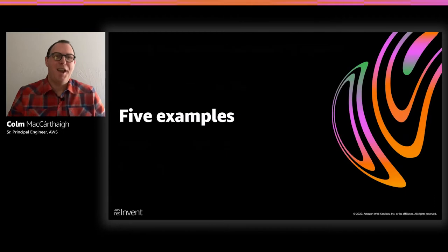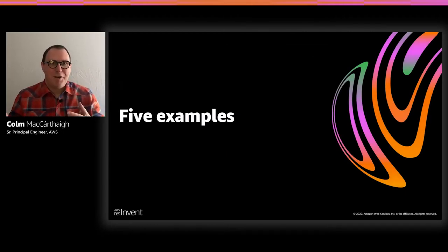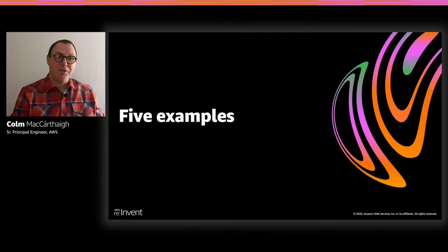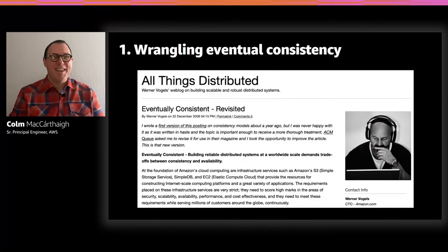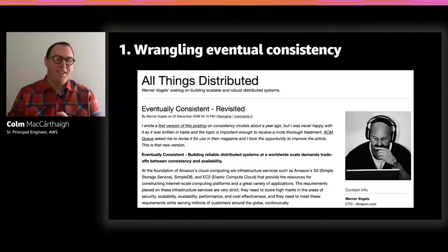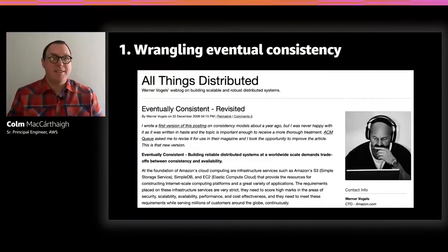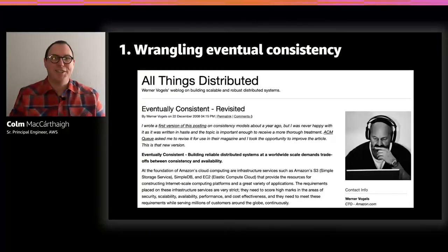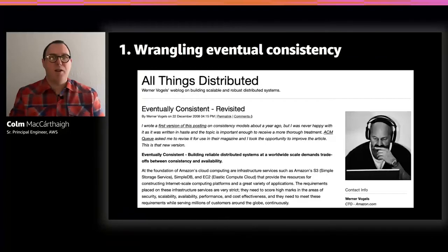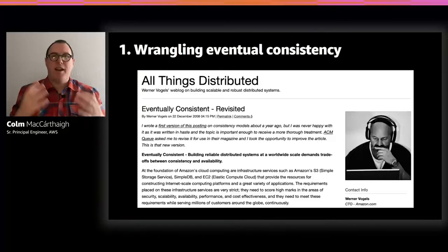I want to get into five examples of things customers have told me make sense for us but may not make sense for them. The first — and one of the oldest things we've been raving about at AWS — is eventual consistency. When I joined in 2008, this was a big topic. Essentially, when you get a lot of things updating a database, it becomes very contended because all readers are contending with all writers.